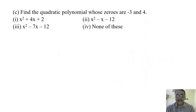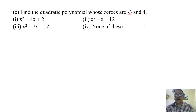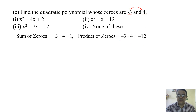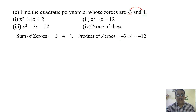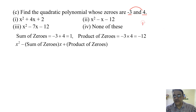Find the quadratic polynomial whose zeros are minus three and four. First we find the sum of zeros: minus three plus four equals one. The product of zeros is minus three into four equals minus twelve. Now we use the formula: x squared minus sum of zeros into x plus product of zeros.